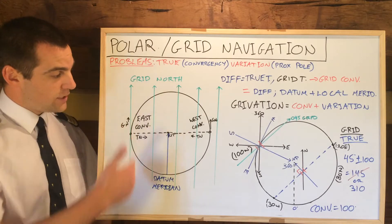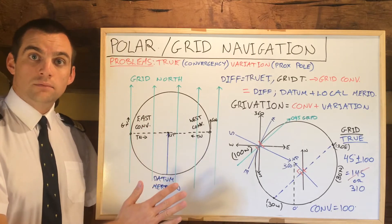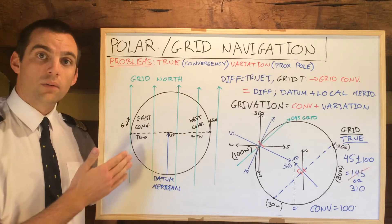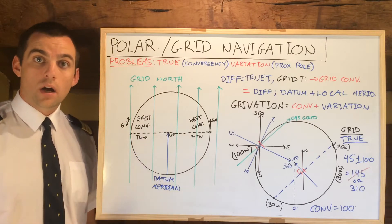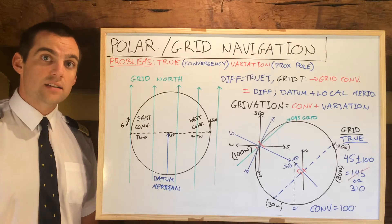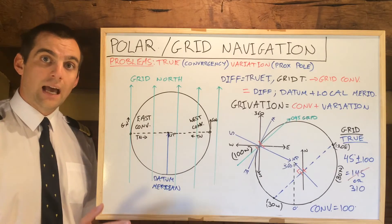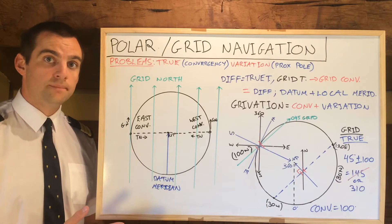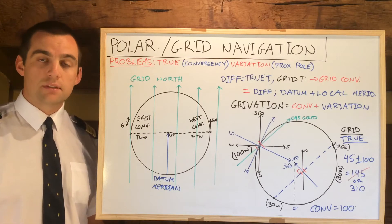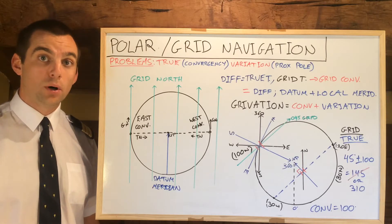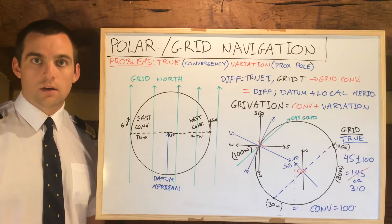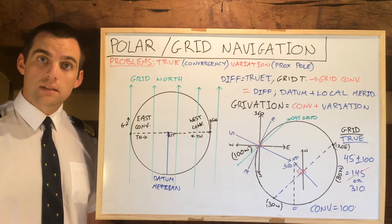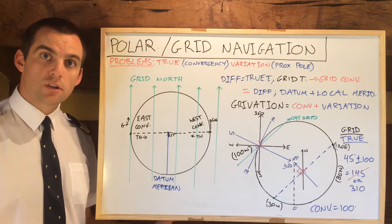Grid navigation is essentially just laying a grid over an area close to the poles, and what this gives us is a grid north. That grid north is what we align our gyroscope to — we would have a heading indicator and instead of aligning it with the compass, we align it with grid north. This is only really an exercise for your ATPL exams. In real life, if you were navigating in the poles, you would use RNAV or GPS. In the old days, this is how they would have done it.